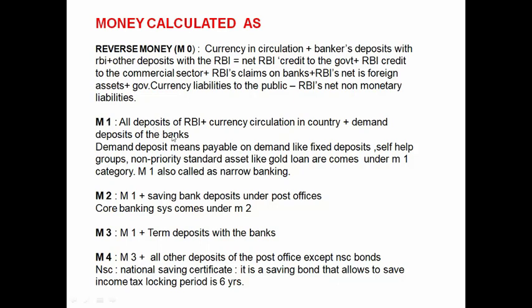M1 consists of all deposits with RBI, plus currency in circulation in the country, plus demand deposits of the banks. Demand deposits are payable on demand — examples include fixed deposits, self-help groups, non-priority sector, and gold loans. M1 is also called narrow banking.